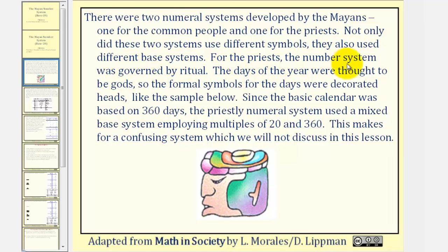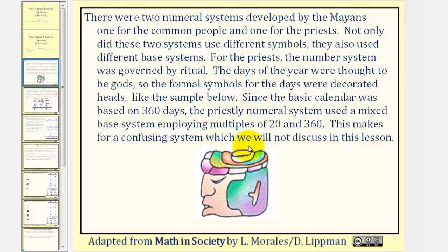For the priests, the number system was governed by ritual. The days of the year were thought to be gods, so the formal symbols for the days were decorated heads like the sample shown. Since the basic calendar was based on three hundred sixty days, the priestly numeral system used a mixed base system employing multiples of twenty and three hundred sixty. This makes for a confusing system which will not be discussed in this lesson.